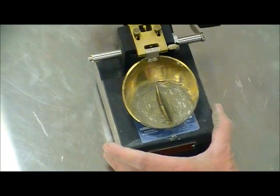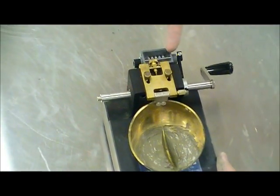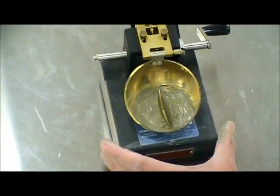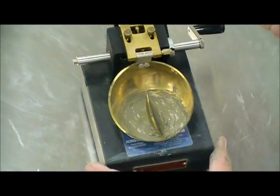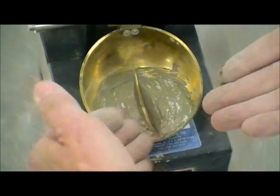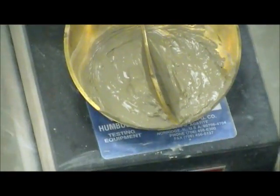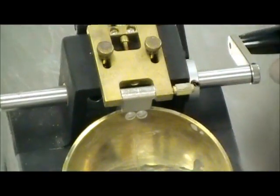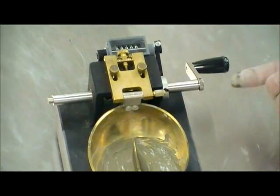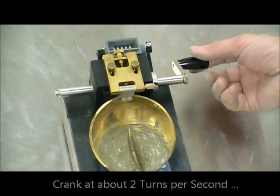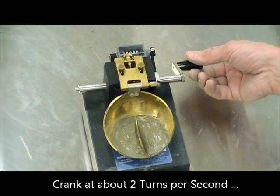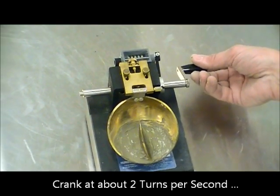The idea here is we're going to zero the counter and we're going to start counting the number of revolutions that it takes for that gap to close for a distance of half an inch. So the procedure is to turn it, two revolutions per second, approximately steady. And the counter is going to take care of the numbers. So here we go.